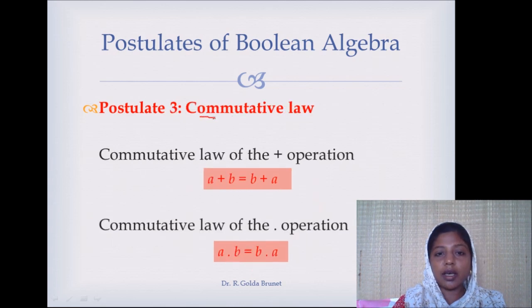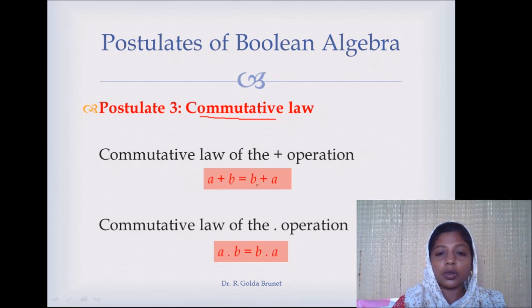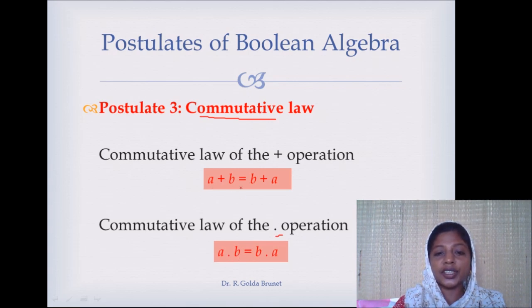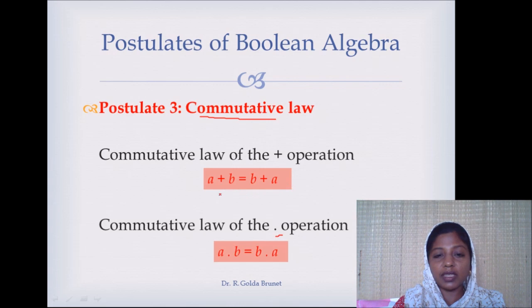The next is the commutative law. The commutative law says A OR B = B OR A — that is, even if you change the order of the operands, the result is going to be the same. And with respect to the AND operation, A AND B = B AND A. Here we change the order of the operands; the operation remains the same because we have a single operation.